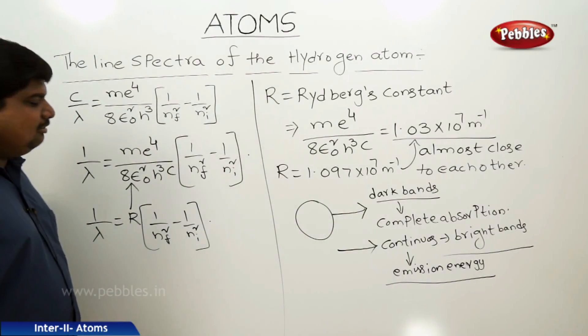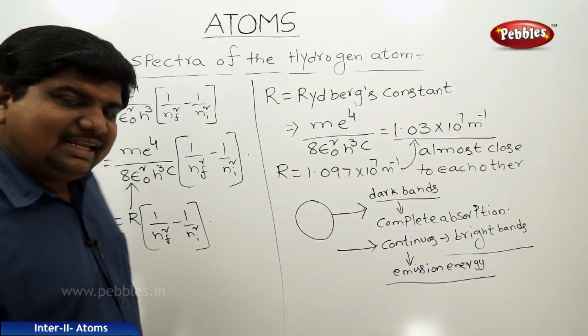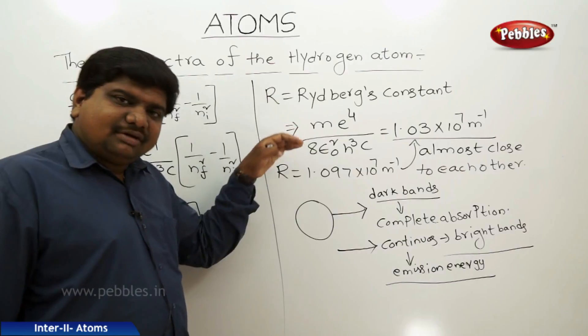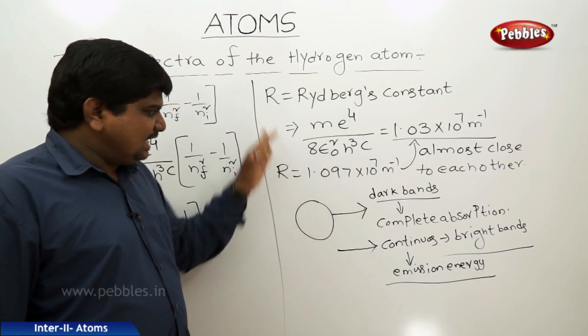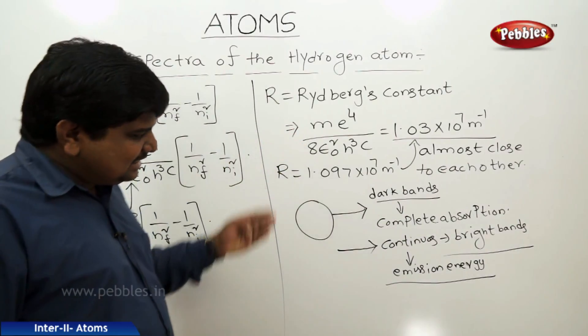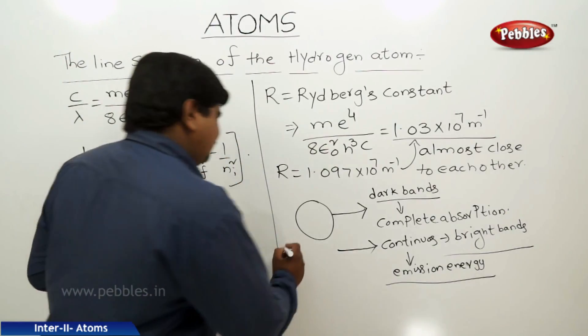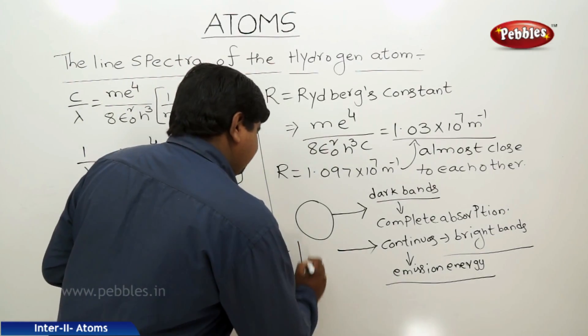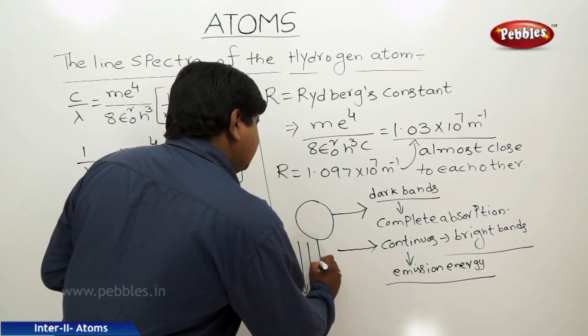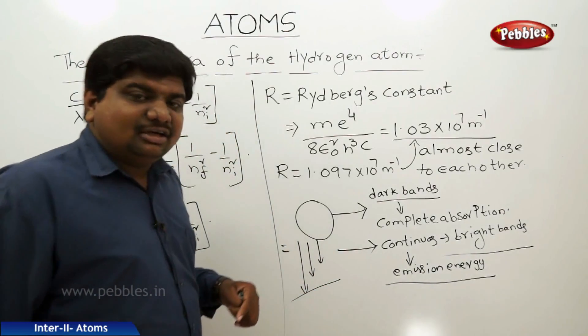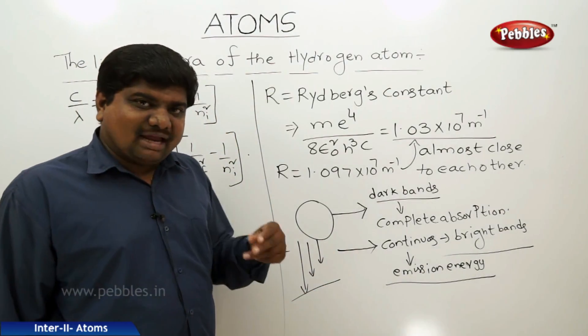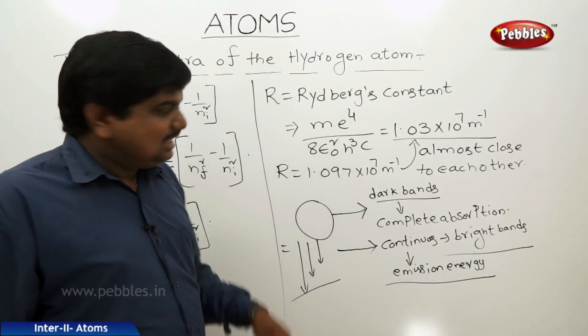So line spectra means when an electron excites or de-excites from one energy level to another, whether excitation or de-excitation, it appears as a line pattern corresponding to its energy levels. These line patterns we have seen as the Lyman, Balmer, Paschen, Brackett, and Pfund series.